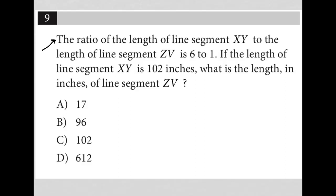This question says the ratio of the length of line segment XY to the length of line segment ZV is 6 to 1. Whenever I see ratio on this test, I think of it as a fraction. So I'm going to write this as a fraction — here's my ratio of XY to ZV, and we're saying that is equal to 6 to 1.